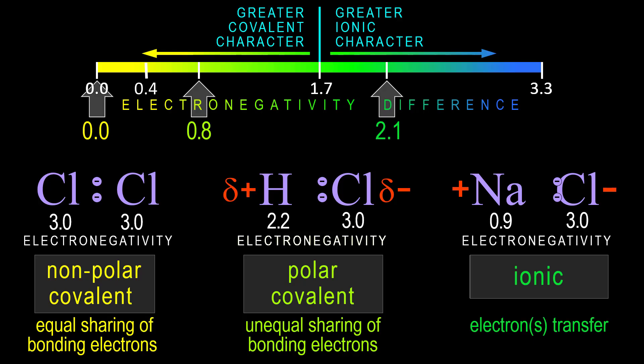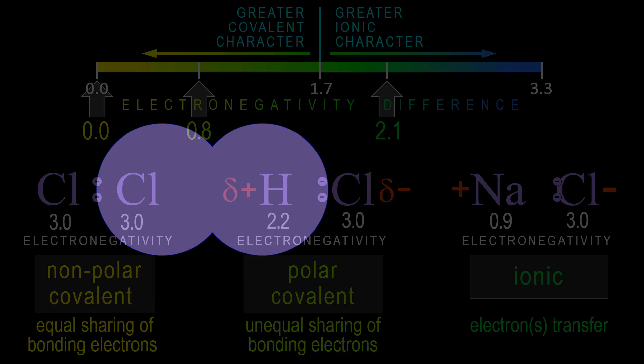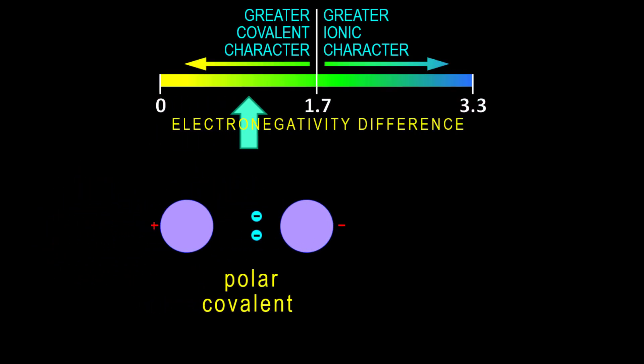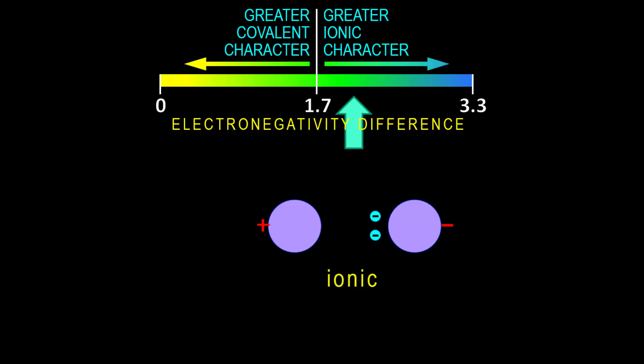It is the electronegativity difference between two bonded atoms that determines whether the bond is nonpolar, polar, or ionic. But this is very much a continuum in which the difference in charge gets larger going from left to right.